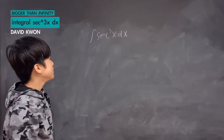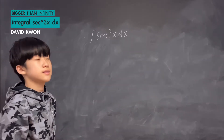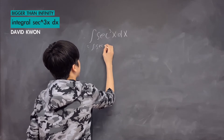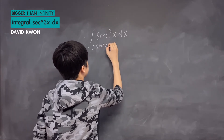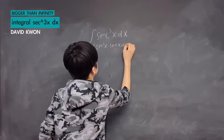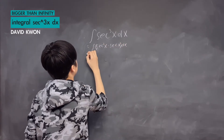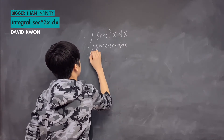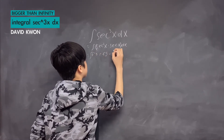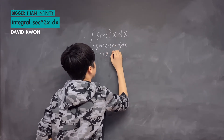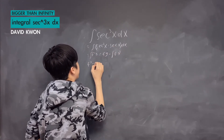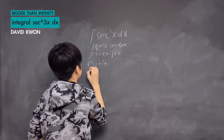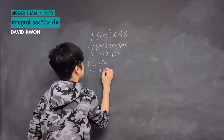Hello everyone, and today we will be integrating the secant cubed x dx. To start off, I want to break them apart by having secant squared x times secant x times dx. We use the integration by parts rule, and I will set f' to be the secant squared x and g to be secant x.